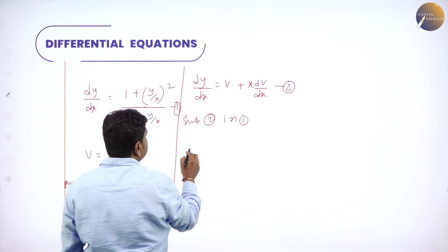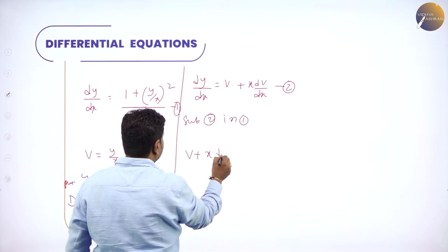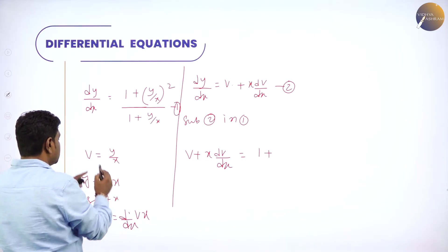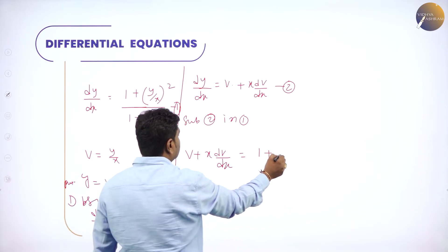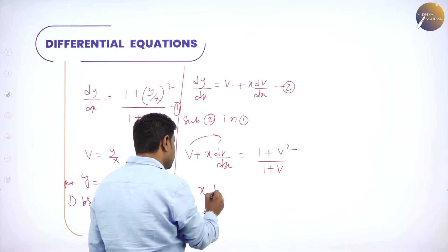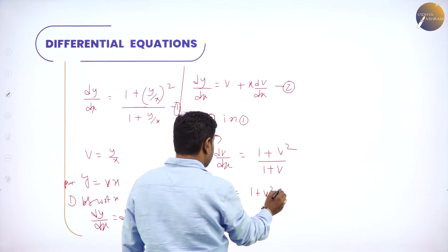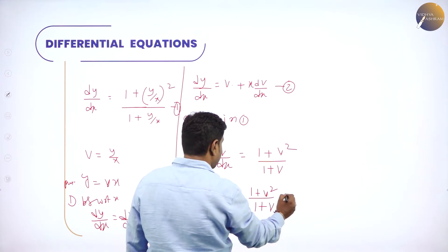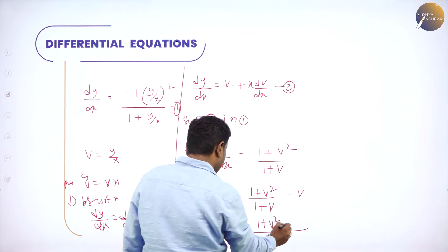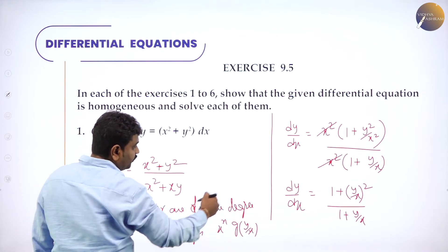Equation 1 becomes: v + x·dv/dx = (1 + v²)/(1 + v), where I replaced y/x with v. Transfer the v term: x·dv/dx = (1 + v²)/(1 + v) − v. Taking LCM over (1 + v): numerator is 1 + v² − v(1 + v) = 1 + v² − v − v².